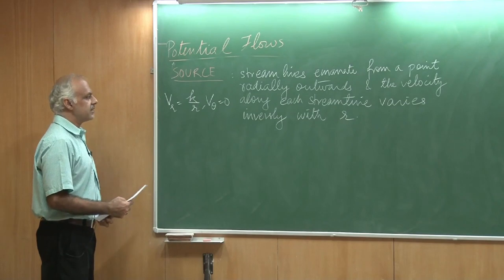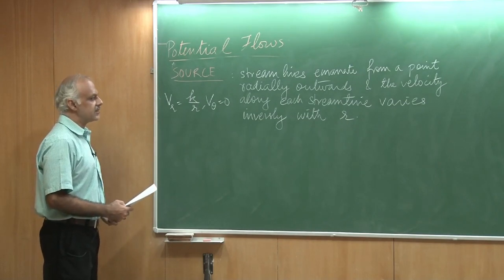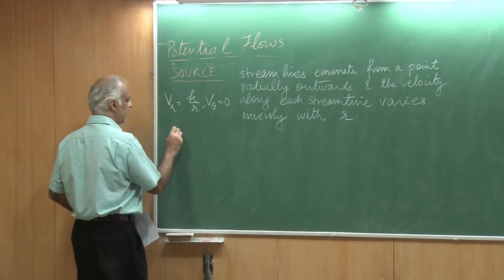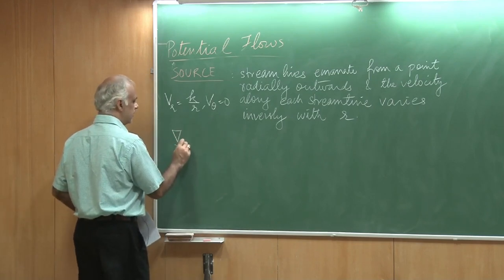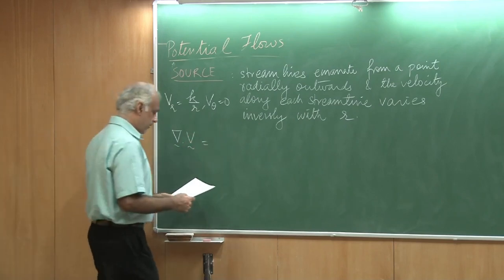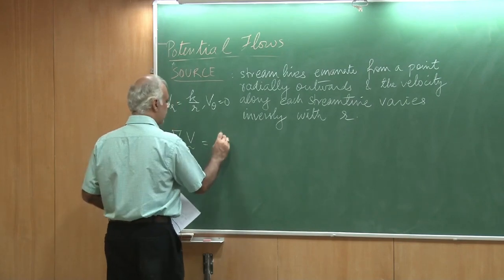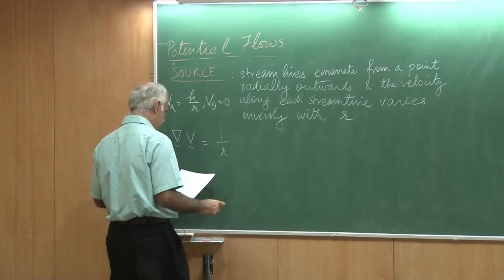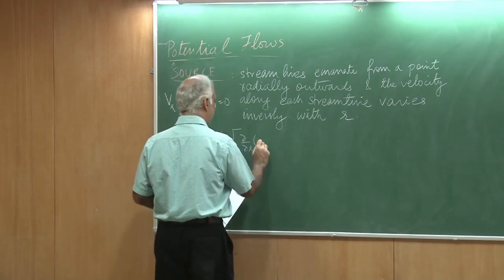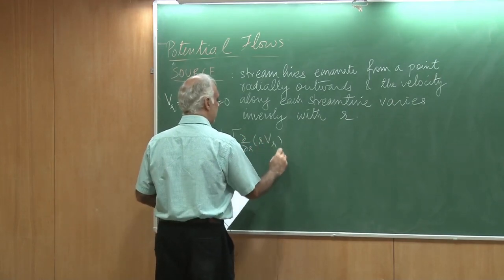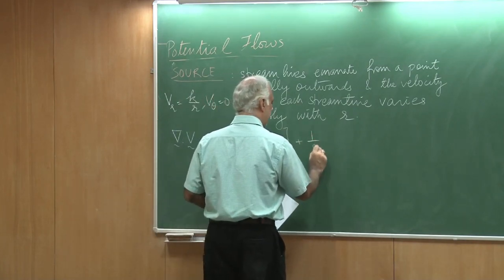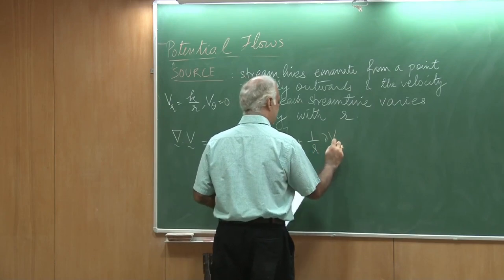Let us determine the velocity potential and the stream function for this kind of a flow. Let us first check the divergence of V. Is this an incompressible flow? Divergence of V is going to tell us 1 by R del by del R of R Vr plus 1 by R del V theta by del theta.